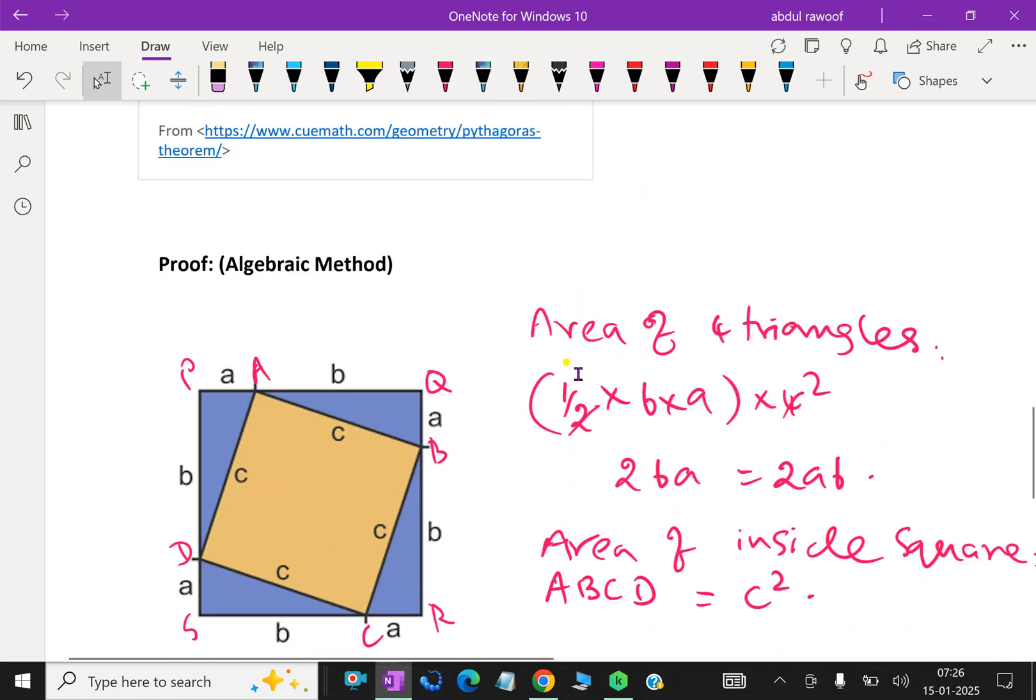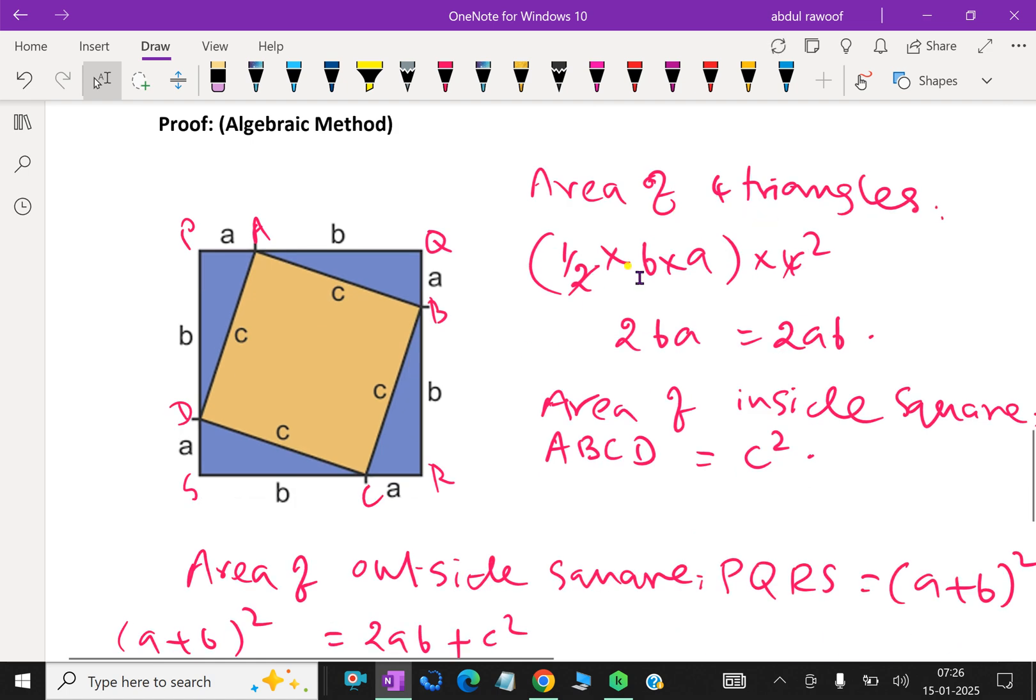Look at here, one more time, the area of the four triangles is base into height into half, into 4 times, since 4 congruent triangles. Therefore, it comes to 2AB. And area of the inside square is side square, that is C².